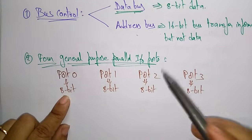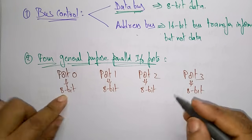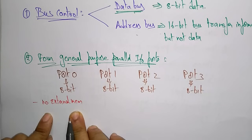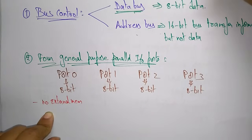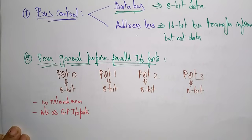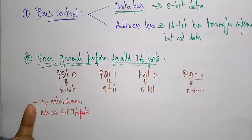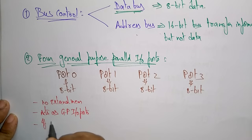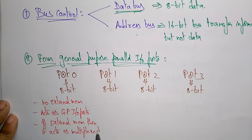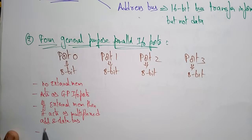Port 0: when no external memory is present, it acts as a general purpose I/O port. However, when external memory is present, it acts as a multiplexed address and data bus. That is why Port 0 is said to perform a dual role.